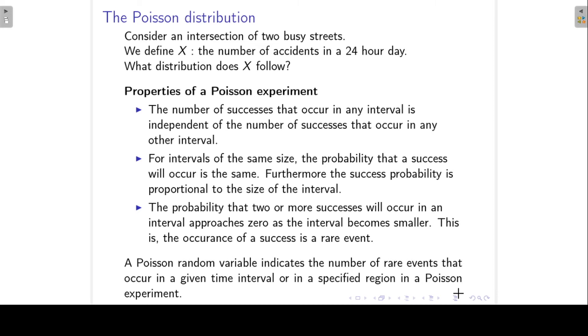A Poisson random variable indicates the number of rare events that occur in a given time interval or in a specified region in a Poisson experiment. We are counting the number of successes, rare events, in a specified time interval, like in our example, the time interval is a 24-hour day, or in a specified region.